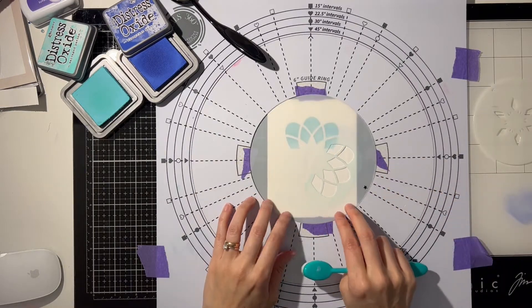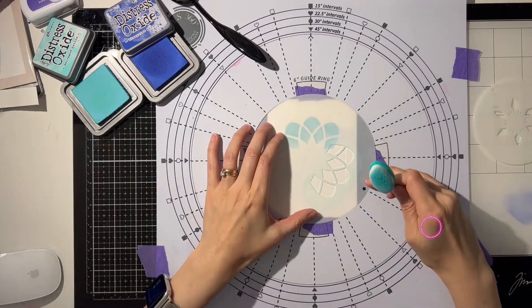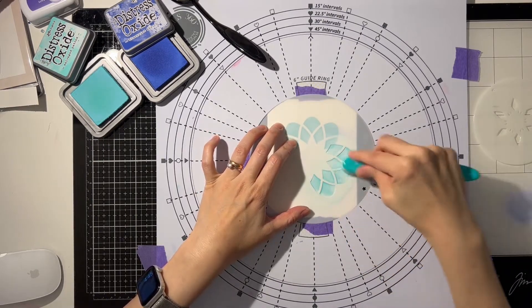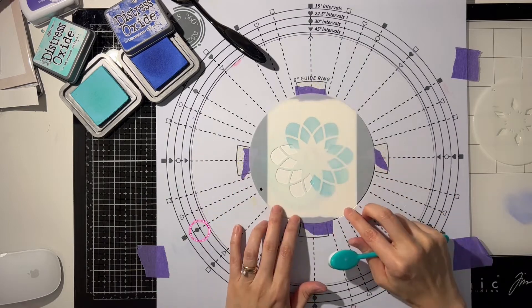My first color is Salvage Patina Distressed Oxide Ink. With a big angle of rotation like this one, I only need to rotate my stencil twice to complete one full turn.